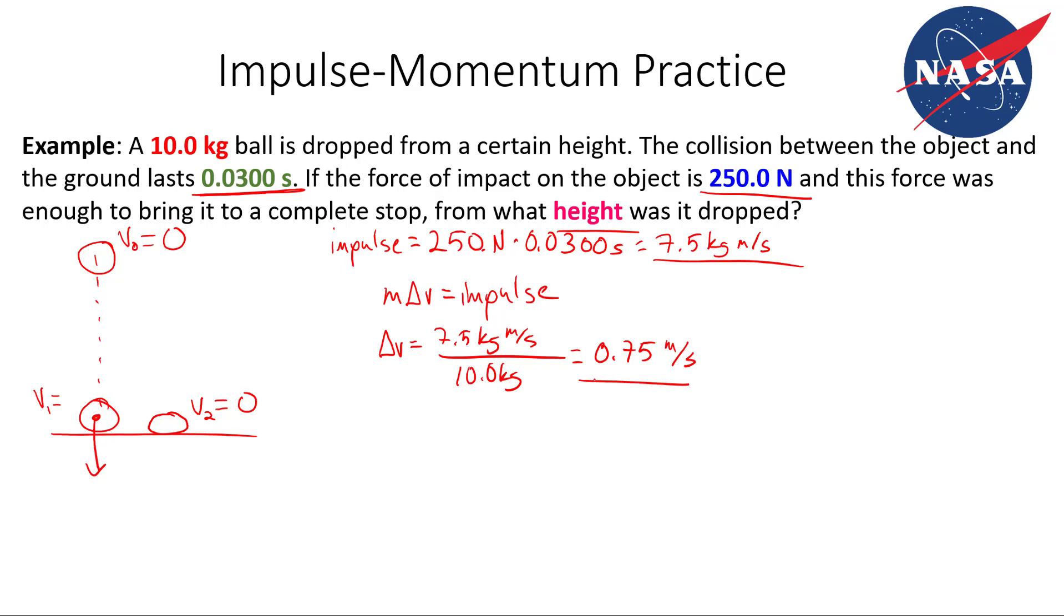So since that's our change in velocity, and our final velocity is 0, this is the magnitude of our change, then that means V1 is 0.75 meters per second.